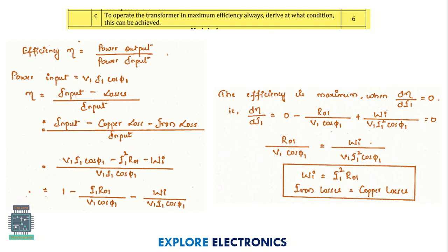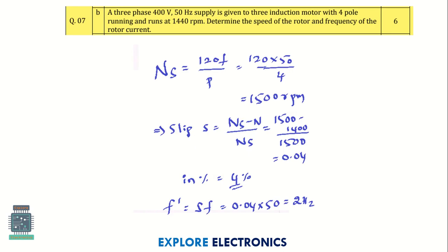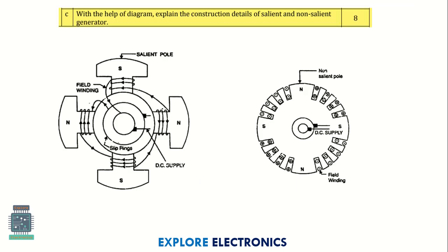With the help of a neat diagram, explain the constructional details of a three-phase induction motor — this is also repeatedly asked. Then there is a problem on a three-phase circuit: a 400 volt, 50 Hz supply is given to a three-phase induction motor with four poles running at 1440 rpm. Determine the speed of the rotor and the frequency of the rotor — it is calculated accordingly.